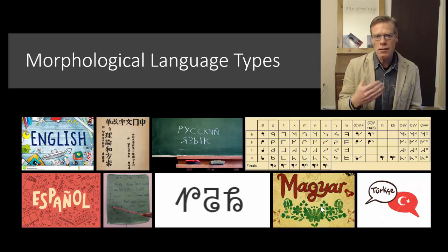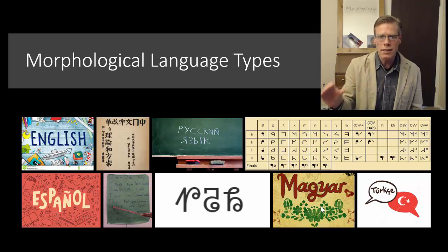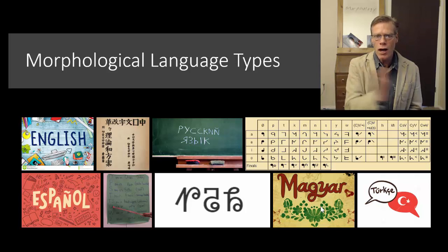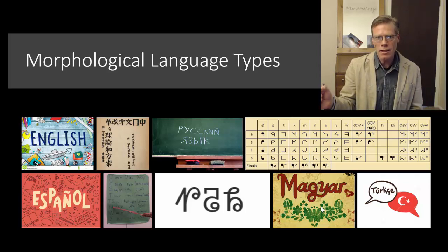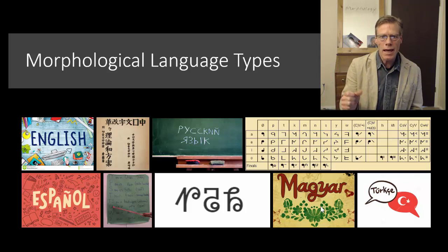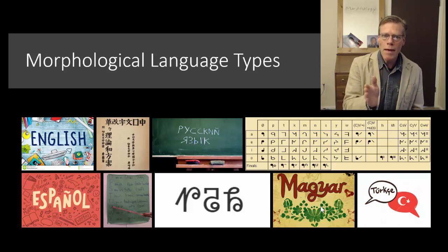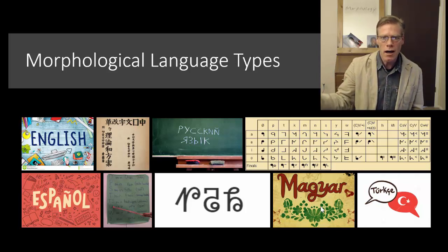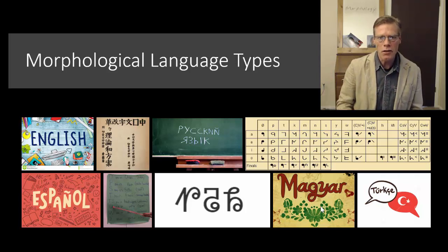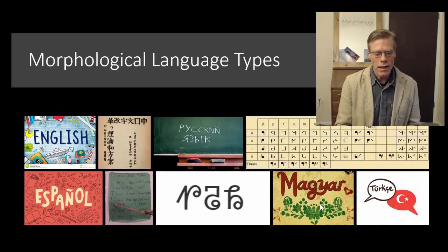I think it's reasonable to think of this more as a continuum than anything else — we've got analytic languages at one end, synthetic languages at another, and even within the synthetic and analytic languages, we may see some properties of some of these other types of languages.